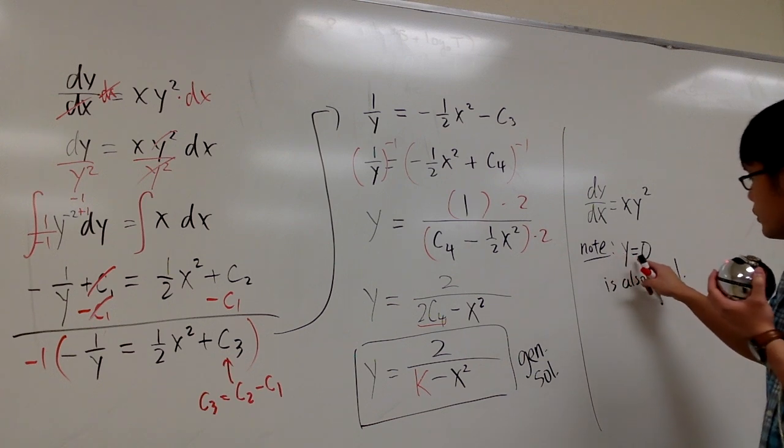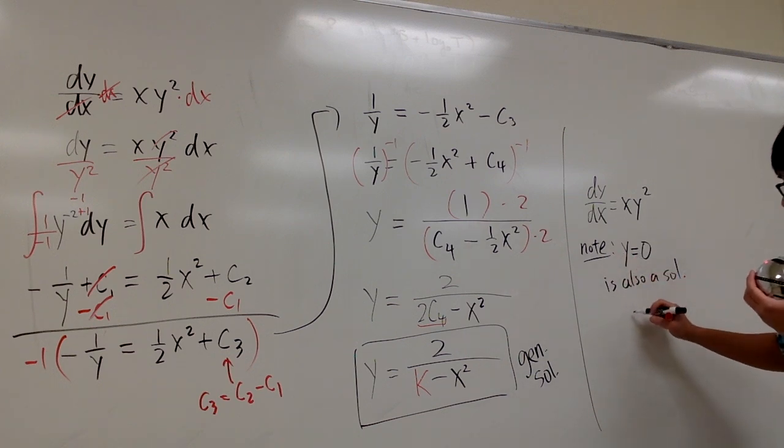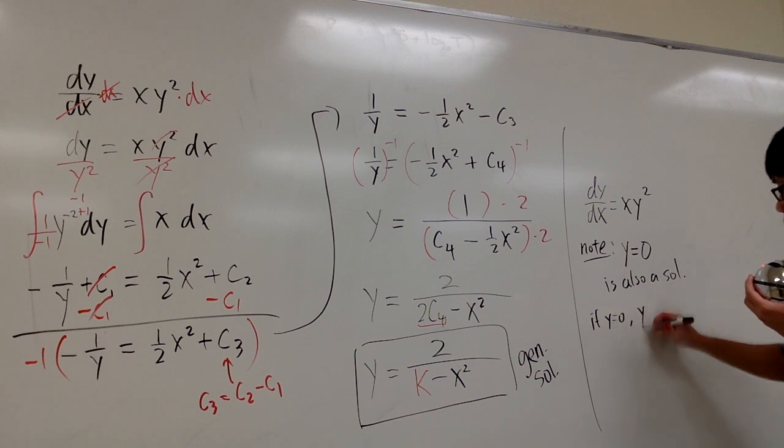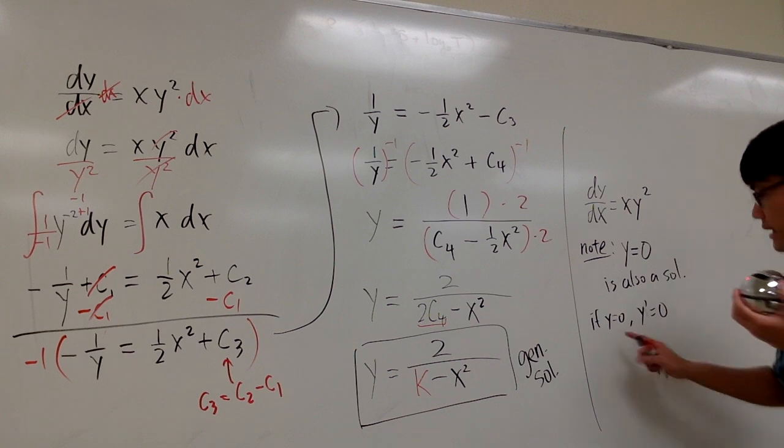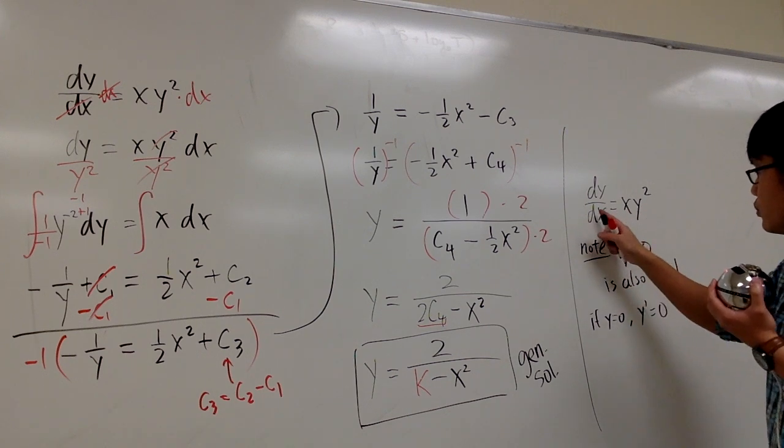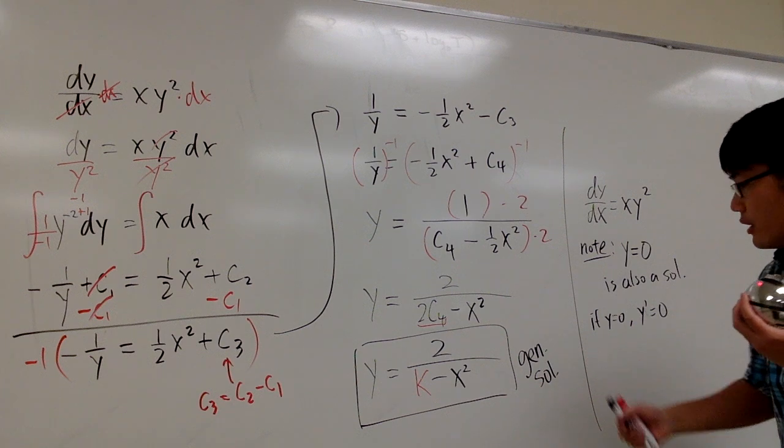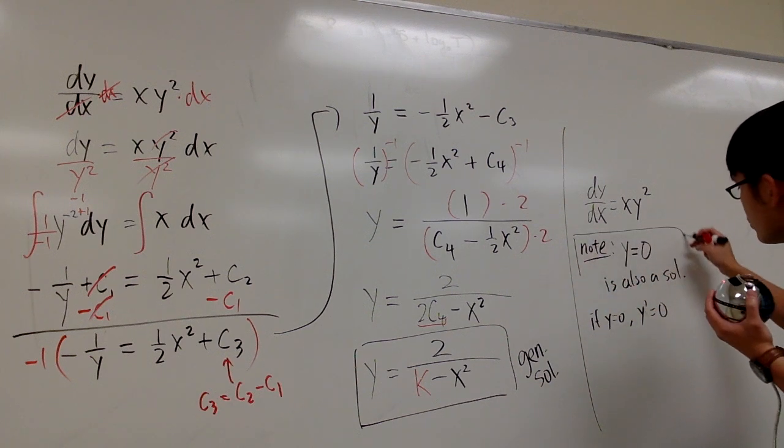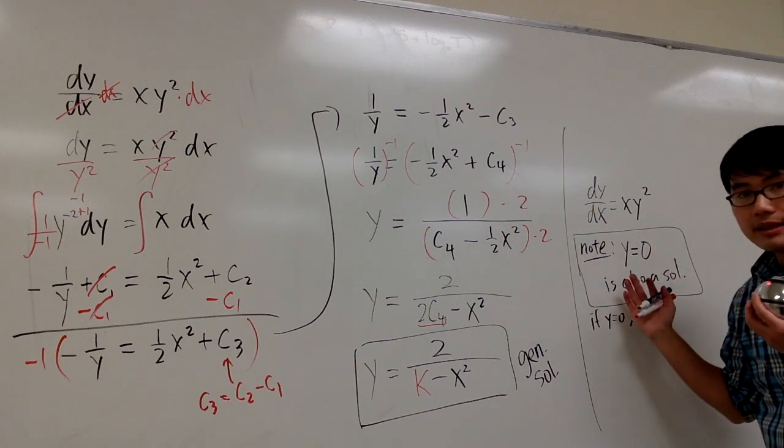Why? Because when y is equal to 0, y prime, the derivative of that would be 0. And you see that I plug in 0 on the right-hand side, I get 0. Derivative is equal to 0, which agrees. So technically, I would also have to include this as part of the answer.